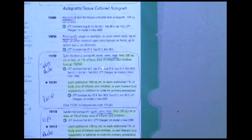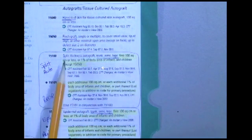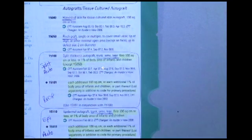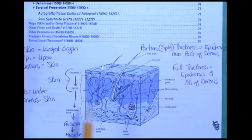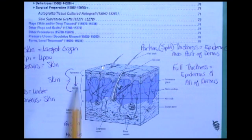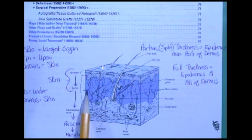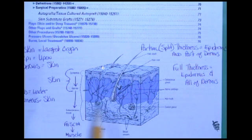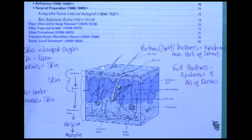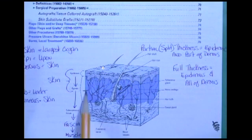We're going to start with autograft — this is the one with the most codes, next to the man-made ones. You need to understand split thickness versus full thickness. On page 57 of your CPT book is the anatomy picture of the skin. The dermis is also known as the true skin — always remember dermis is key. Partial thickness goes part way through the dermis. The graft takes better the thicker it is — just like the thicker your sod, the better chance it will take. But it's a trade-off: if they take a full-thickness graft, the donor area is going to suffer.